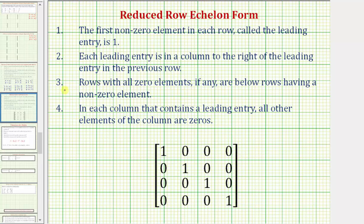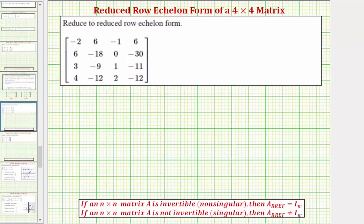If the first three conditions are met, the matrix would be in row echelon form. If all four are met, it's in reduced row echelon form. Here's one example of a four by four matrix in reduced row echelon form — in this case, it's actually a four by four identity matrix. Now let's begin performing row operations to write this matrix in reduced row echelon form.